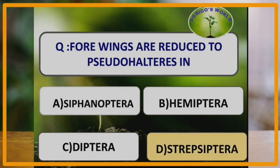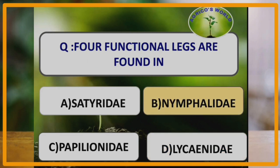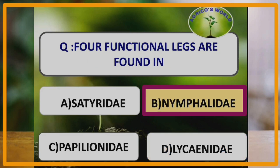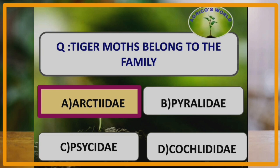Four wings are reduced to pseudohalteres in the order Strepsiptera. Four functional legs are found in the family Nymphalidae of the order Lepidoptera.